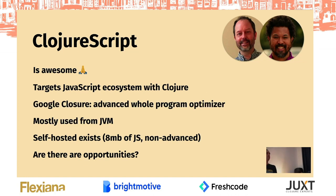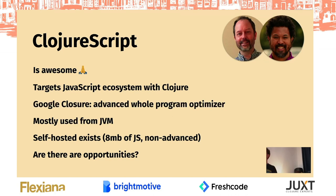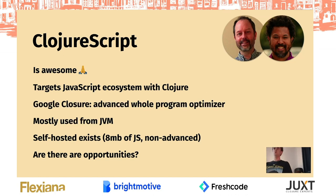I think it's fair to say that ClojureScript is used mostly from the JVM — around 99% of people who do front-end applications with ClojureScript use the JVM compiler. Although there is also self-hosted ClojureScript, which means the compiler can run in a JavaScript runtime, there are trade-offs. If you use self-hosted, you compile to a front-end application and include some dependencies — there is like eight megabytes of JavaScript which is not advanced-compiled because self-hosted doesn't support that.